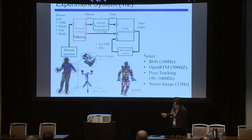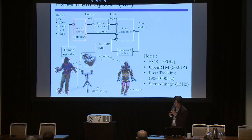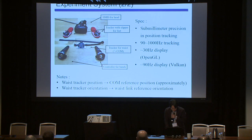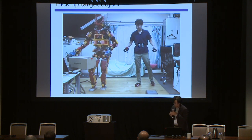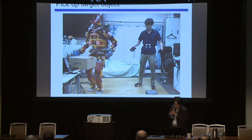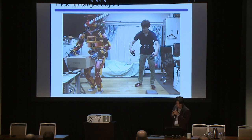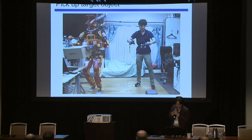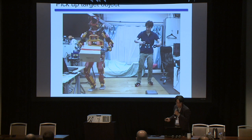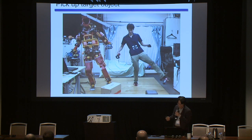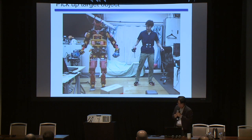Using our VR master-slave system, we can easily control the robot, pick up a target with the hand, and carry it away using the feet. There is no force feedback to the operator. The key advantage is that we can control the hand and feet simultaneously, completing tasks more rapidly and smoothly.